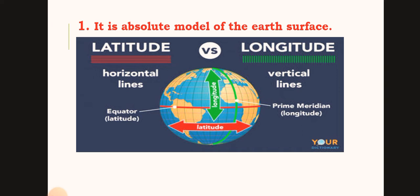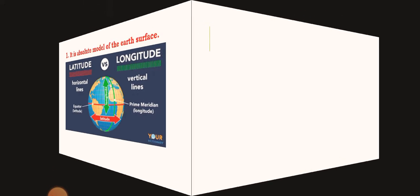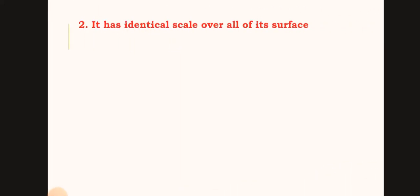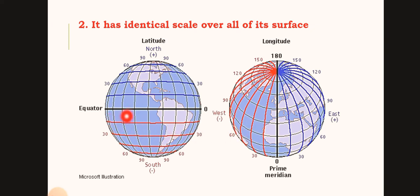The globe is spherical — that is the shape of the earth's surface. It has identical scale over all its surface.